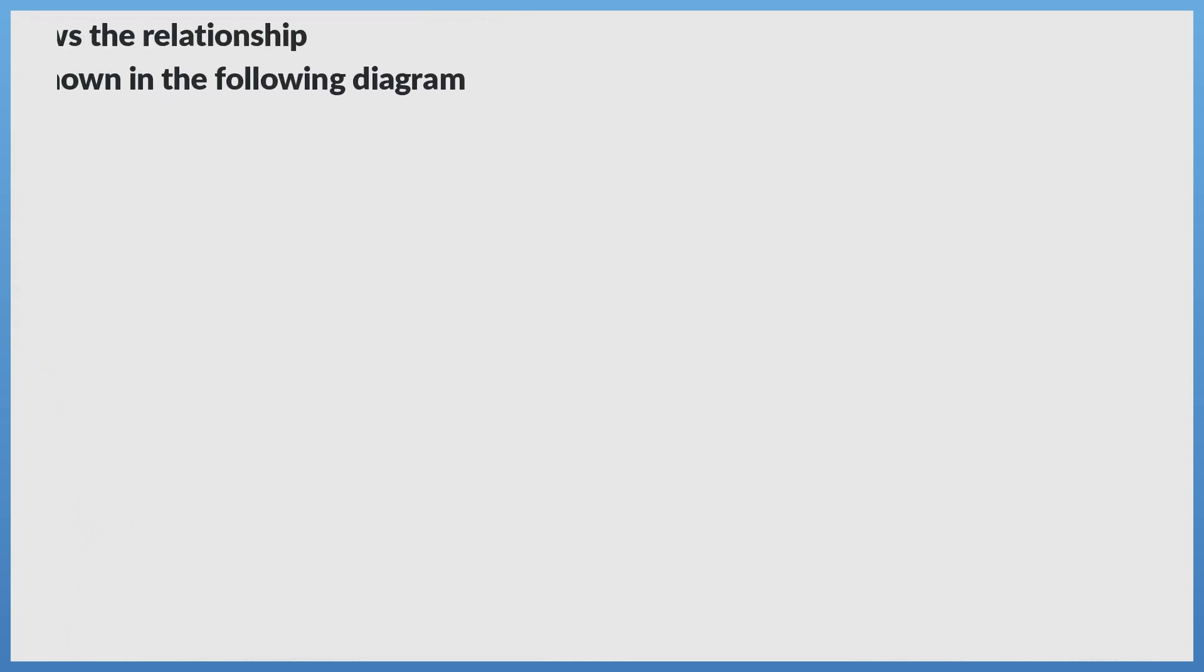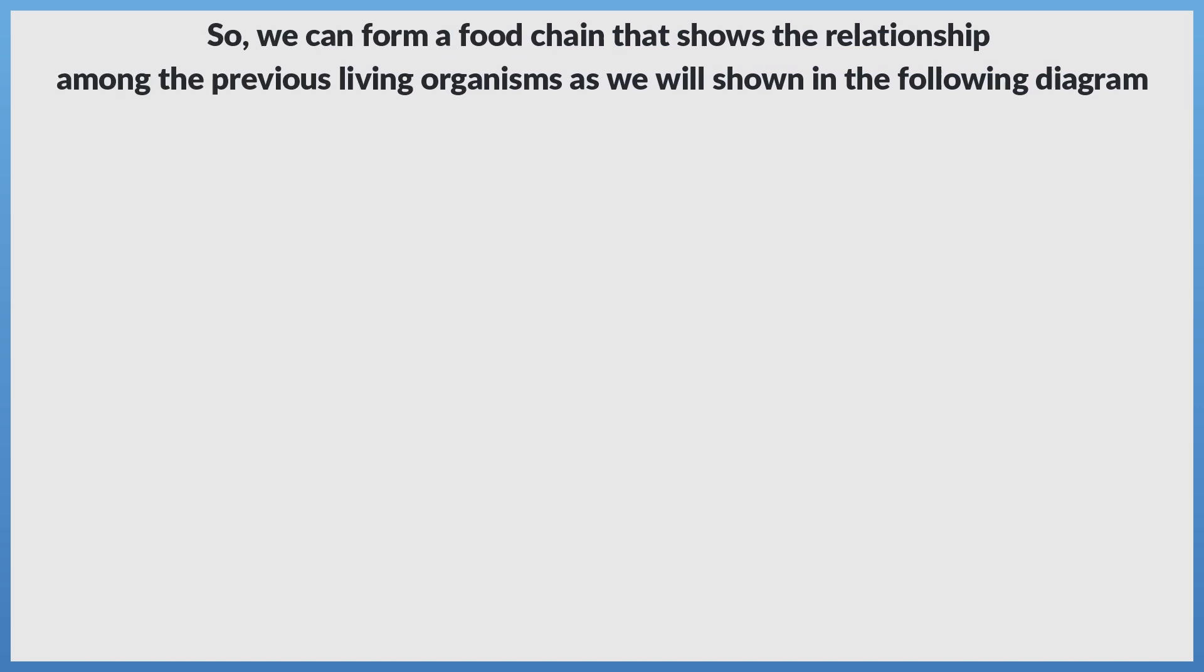So, we can form a food chain that shows the relationship among the previous living organisms as we will show in the following diagram.